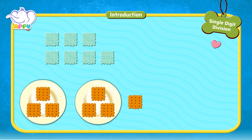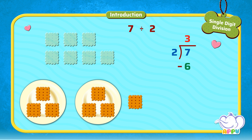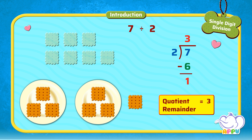In this example, to divide 7 by 2, we write the division bracket and write 2 outside the bracket and 7 inside the bracket. Step 1: we figure out how many 2's does it take to make 7 or almost 7, which is 3. Step 2: we multiply 2 and 3, we get 6. Step 3: we subtract 6 from 7, we get 1.